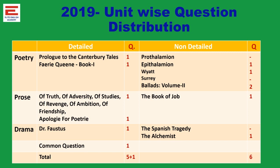In poetry, the detailed works are Prologue to the Canterbury Tales and Faerie Queene Book 1 — one question from each. From the non-detail, from Prothalamion no question, from Epithalamion there is one question. From Peacock Volume 1, Thomas Wyatt, one question is asked; from Surrey, no question. From Peacock Volume 2, Ballads — there are 39 ballads, out of which two questions are asked.